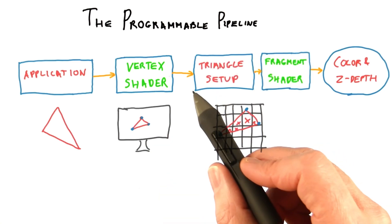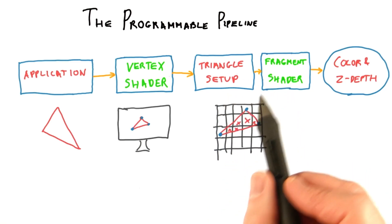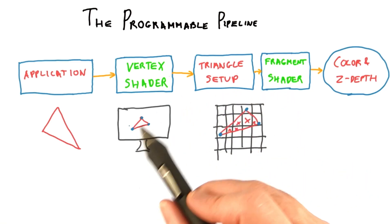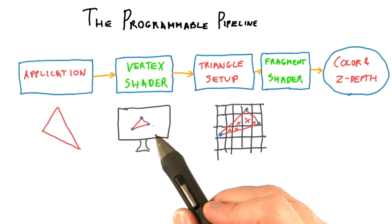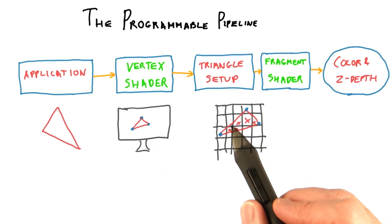The second half of our modern GPU pipeline we represent here by two stages: triangle setup and the fragment shader. Triangle setup uses the three screen locations generated by the vertex shader for an incoming triangle. This forms a triangle in screen space.